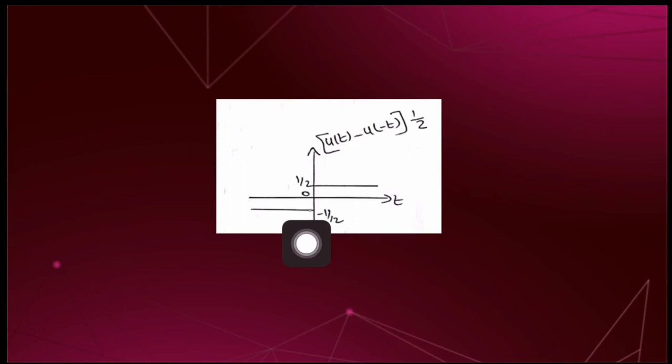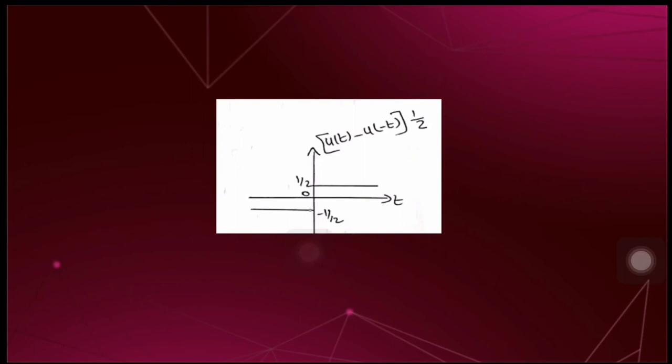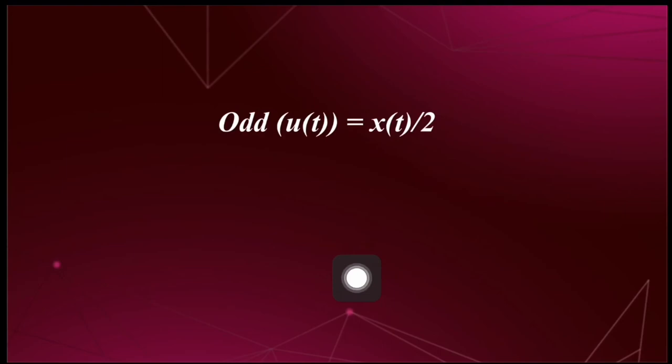The resulting signal has an amplitude of 1/2 for t greater than 0 and −1/2 for t less than 0. This is our odd part of u(t). When we compare this signal with x(t) given in the question, we get: odd part of u(t) = x(t)/2. So our answer is option A. That's all about this session — thanks for watching.